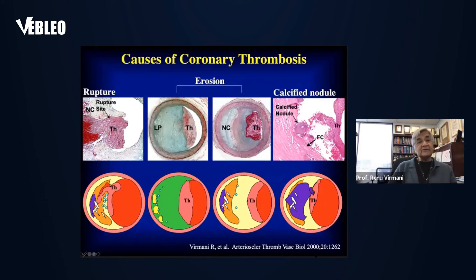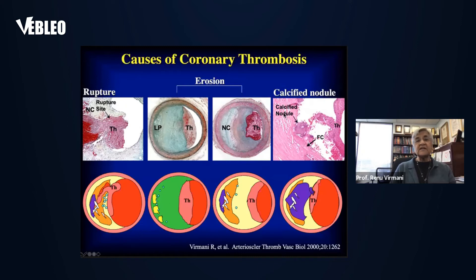Coronary thrombosis: the main cause is plaque rupture in about 60% of cases — there is a thin cap that has ruptured with an overlying thrombus in the lumen and an underlying necrotic core. Plaque erosion is the second most common cause, occurring in 25 to 30% of cases, where either pathologic intimal thickening with a lipid pool or a fibroatheroma underlies with no communication to the lumen but an overlying thrombus. A calcified nodule with an overlying thrombus can also lead to acute coronary syndromes.